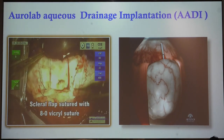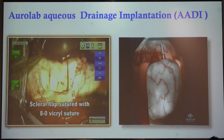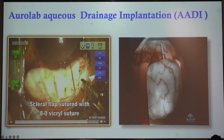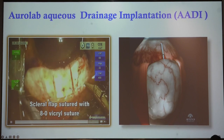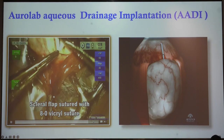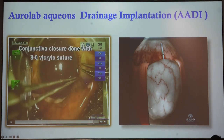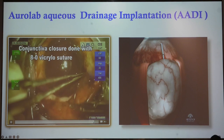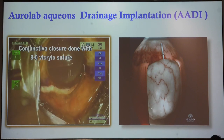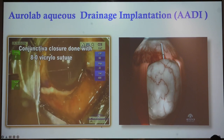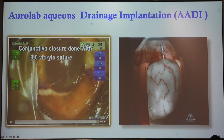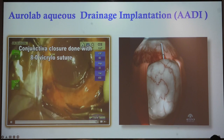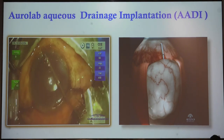Keep in mind the closure should not be too tight — the tube should not be compressed. Like any other surgery, tube surgery also needs meticulous conjunctival closure. The tube has to be nicely covered with conjunctiva, and it needs a watertight closure.